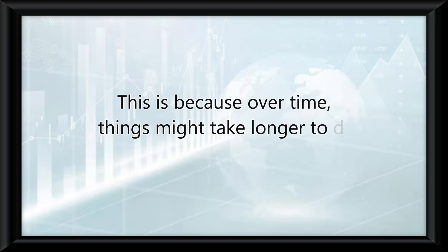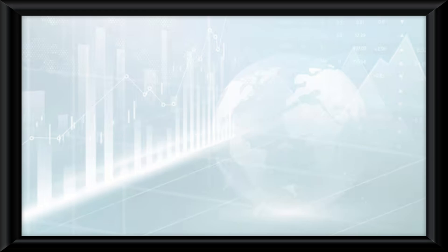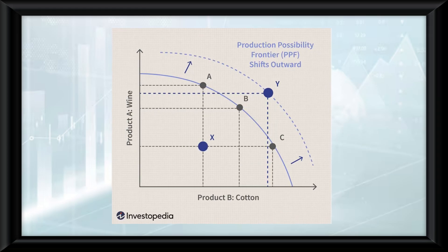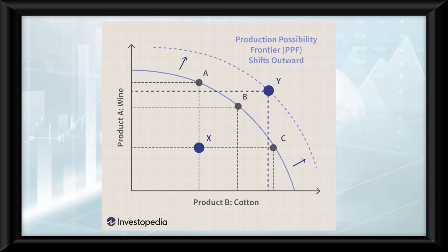And this is because over time, things might take longer to do, and the fact that humans aren't perfect. This means you might have curves that look like this, but you can still calculate opportunity costs, though it may be harder, like in this scenario.